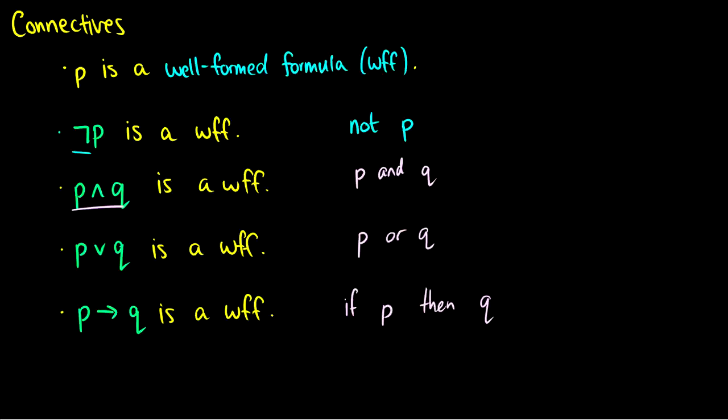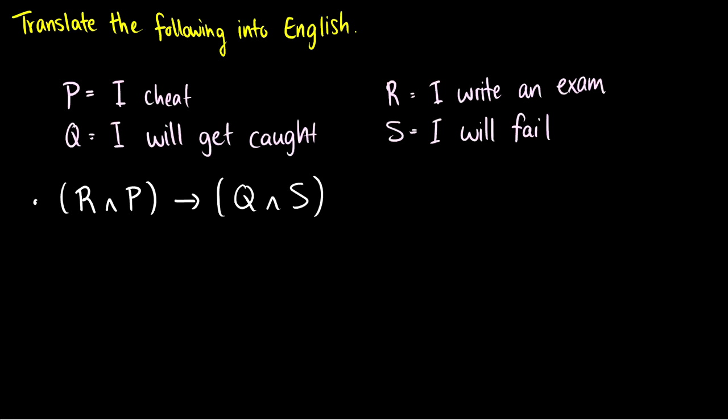When we get to the truth tables video, we'll learn about the truth conditions of each of these and how the truth output changes depending on the truth value of the propositions. But for now, I just want to focus on translating these into English. So here is a key of propositions, and here is a well-formed formula. And I'm saying translate the well-formed formula into English.